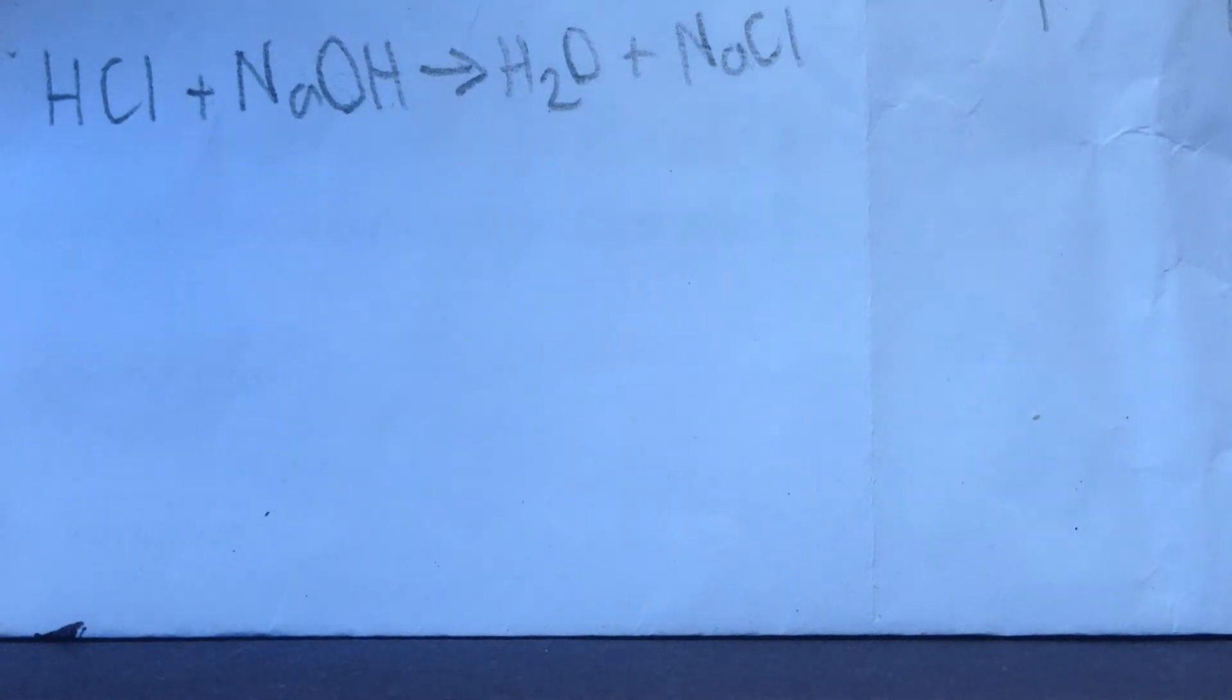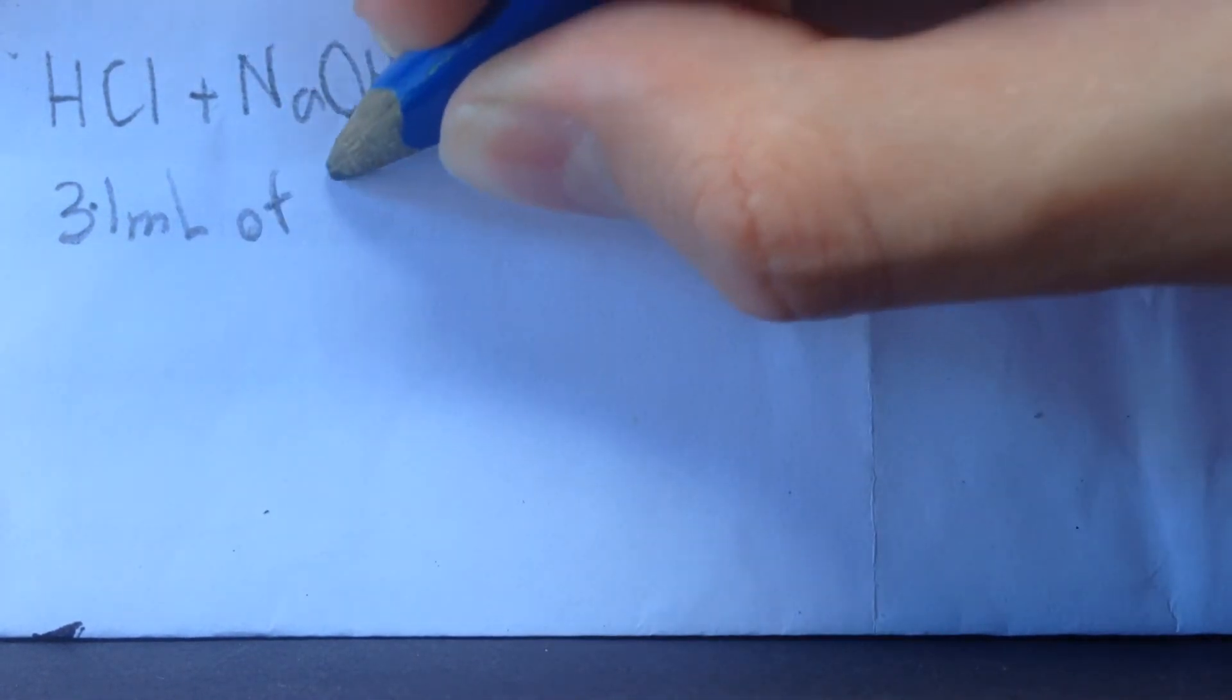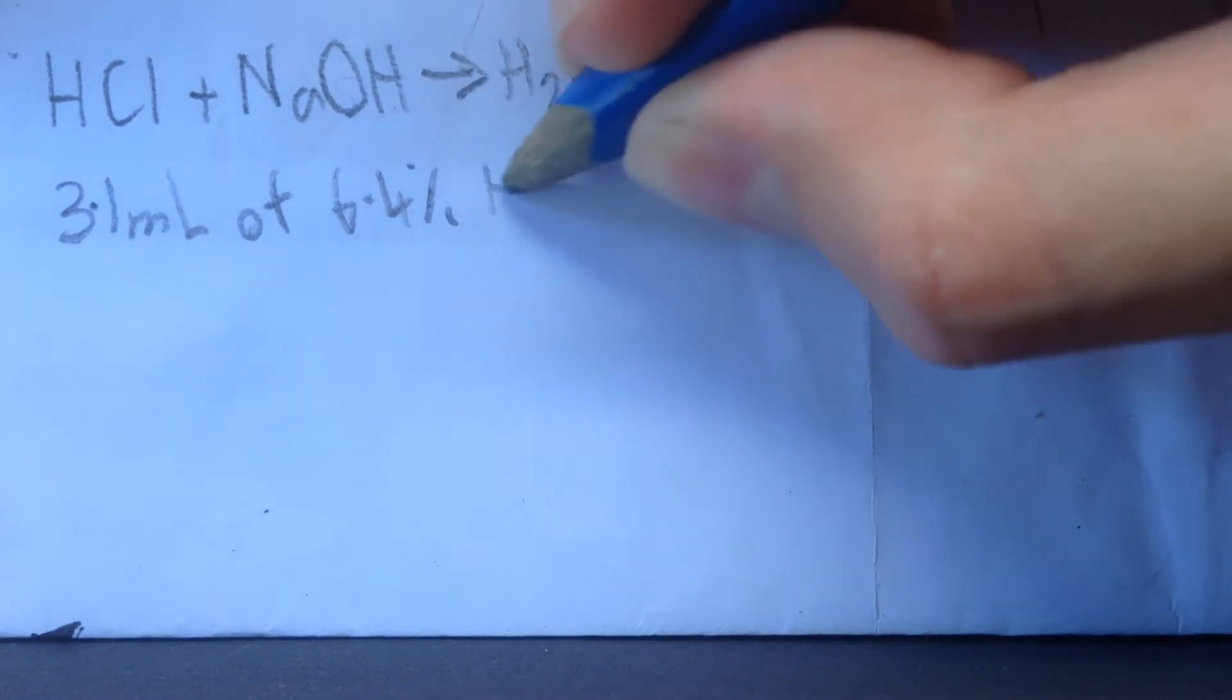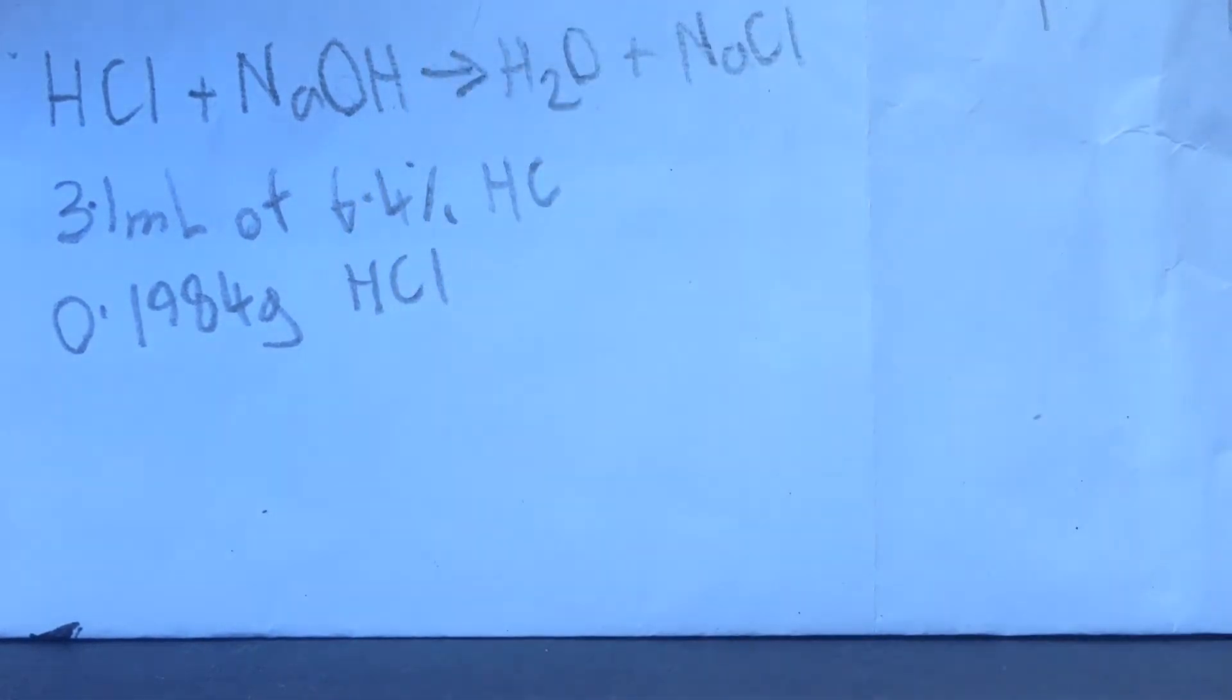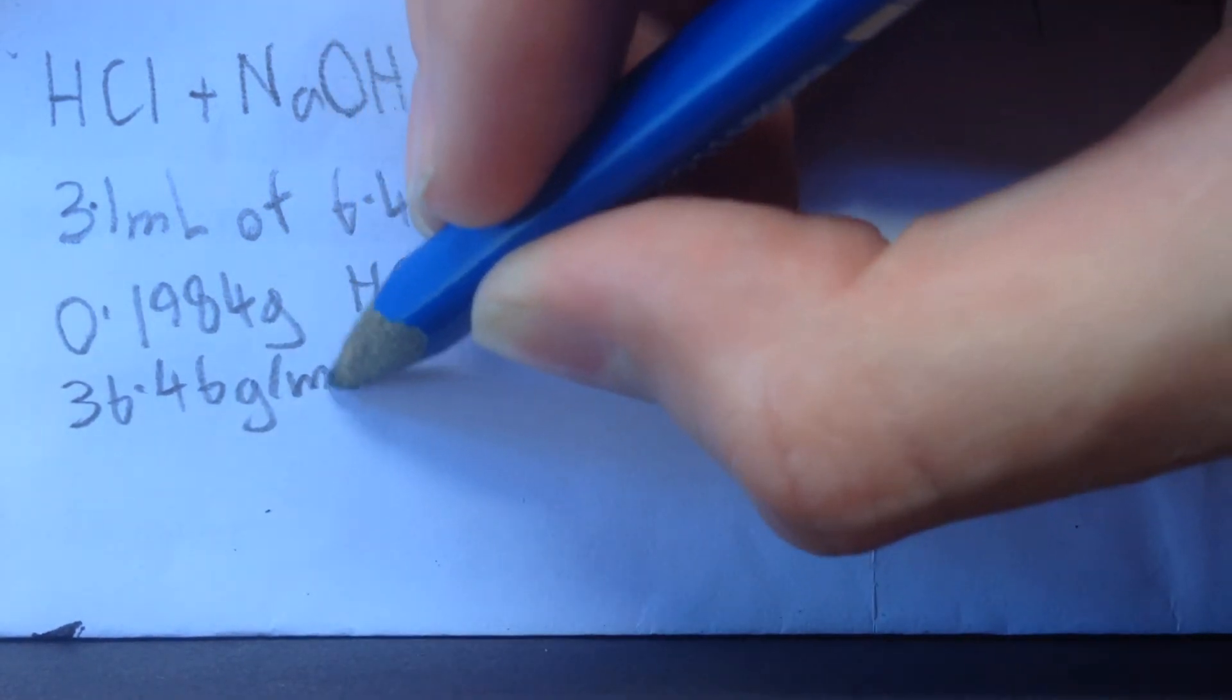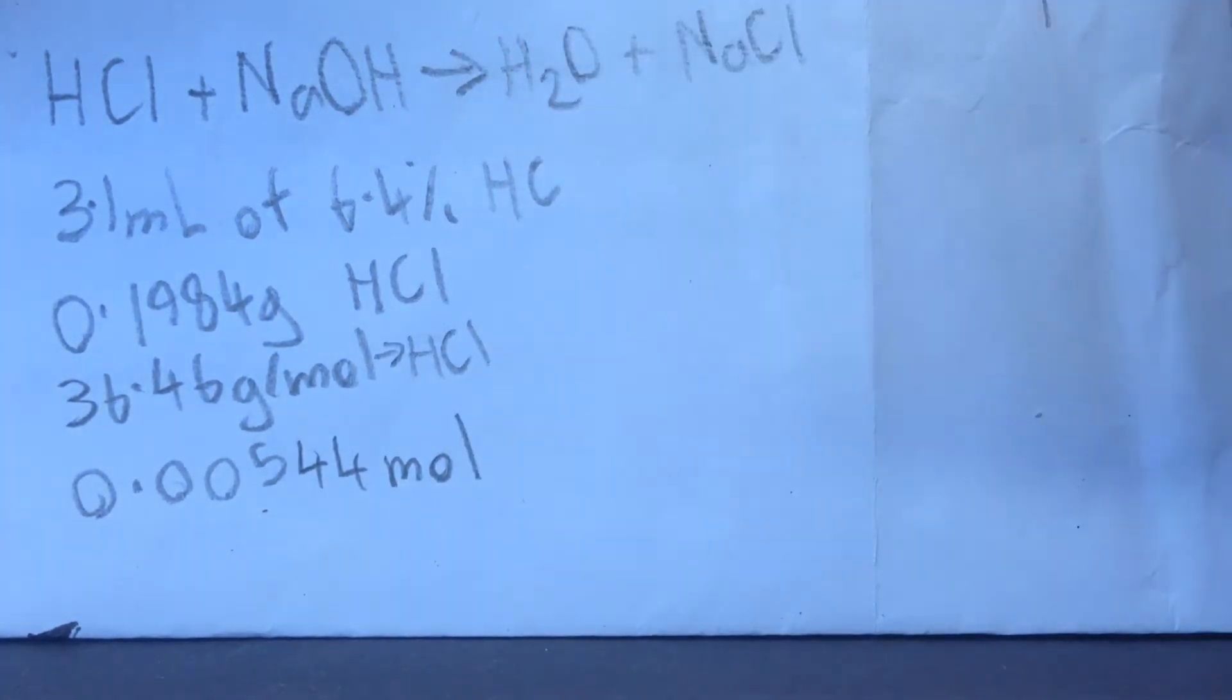So first of all, the amount of acid that we used was 3.1 millilitres of 6.4% hydrochloric acid. So this corresponds to 0.1984 grams of HCl, which again corresponds to using the 36.46 grams per mole molar mass of hydrochloric acid. We get round about 0.00544 moles of hydrochloric acid that were in the reaction.